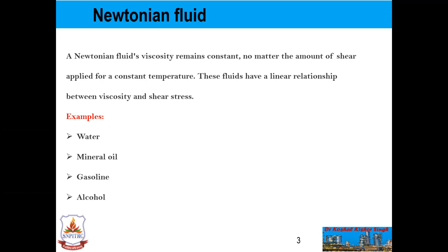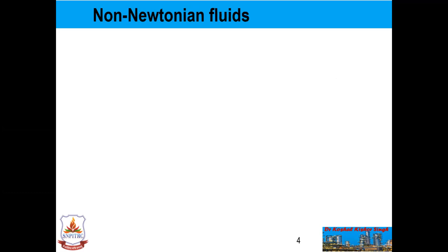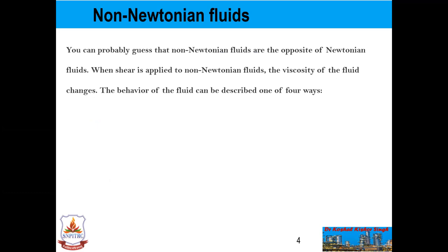Non-Newtonian fluids are the opposite of Newtonian fluids. When shear is applied to non-Newtonian fluids, the viscosity of the fluid changes. The behavior of the fluid can be described in one of four ways: dilatant, pseudoplastic, rheopathic, and thixotropic. We will now discuss all these four types in detail.